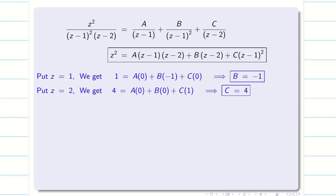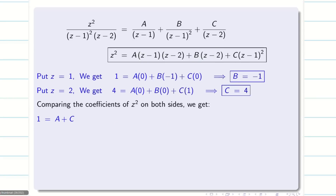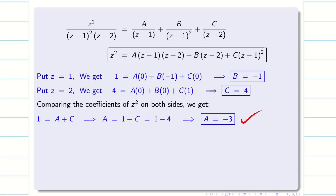The best method is comparing coefficients — either the highest power or the lowest value. I'll take the highest power, which is 2. Comparing coefficients of Z square on the left hand side gives 1. On the right hand side: the first term gives A, the second term has no Z square so it's 0, and the third term gives C. So A plus C equals 1, meaning A equals 1 minus C. Substituting C equals 4, we get A equal to minus 3.